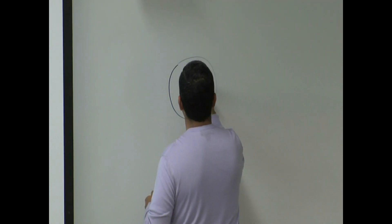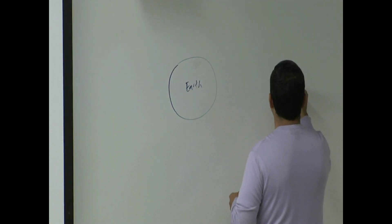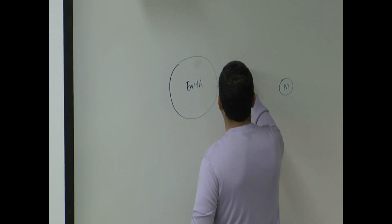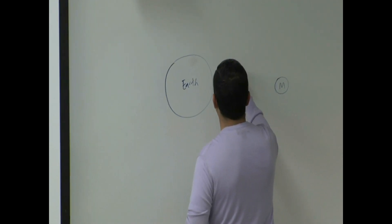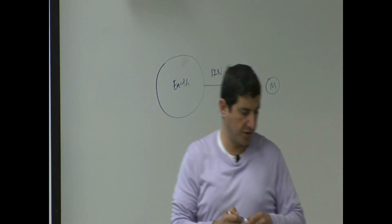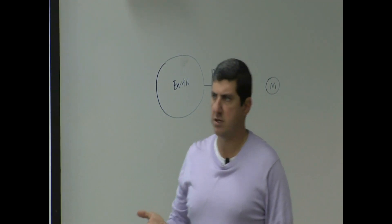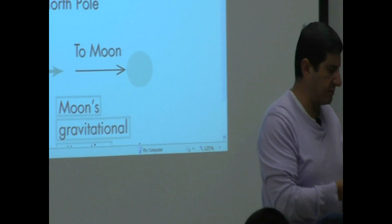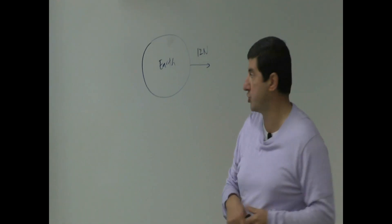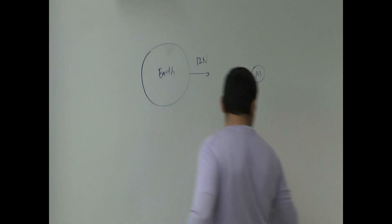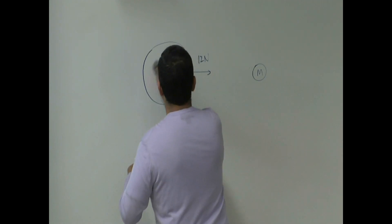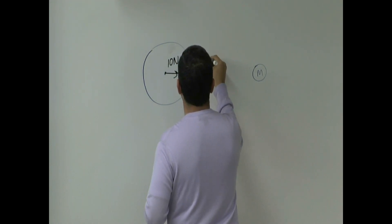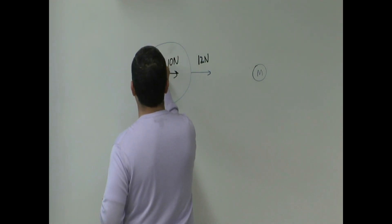Let's say here is the earth and here is the moon. Let's say the moon attracts the near side of the earth with a force of 12 newtons — of course it's a lot larger than that, like thousands and thousands of newtons, but I'm just using 12 newtons to illustrate. Newton is a unit of force. Then the center of the earth, the moon is attracting with a force of 10 newtons. And then the far side of the earth, the moon is attracting with a force of 8 newtons.